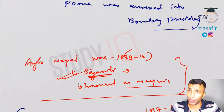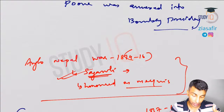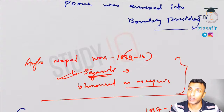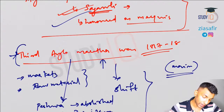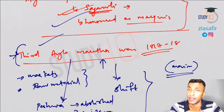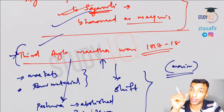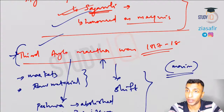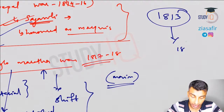Pune was annexed into Bombay Presidency. When we discuss the 1857 revolt we will talk about Nana Sahib, who fought from Kanpur. Nana Sahib was the adopted son of Bajirao II — the reason he was in Kanpur is that his father Bajirao II was uprooted and sent to Bithur, so Nana Sahib was living there. The shift in policy started under Hastings and reached its peak under Dalhousie, who introduced the Doctrine of Lapse, captured many areas, and that led to the 1857 revolt.